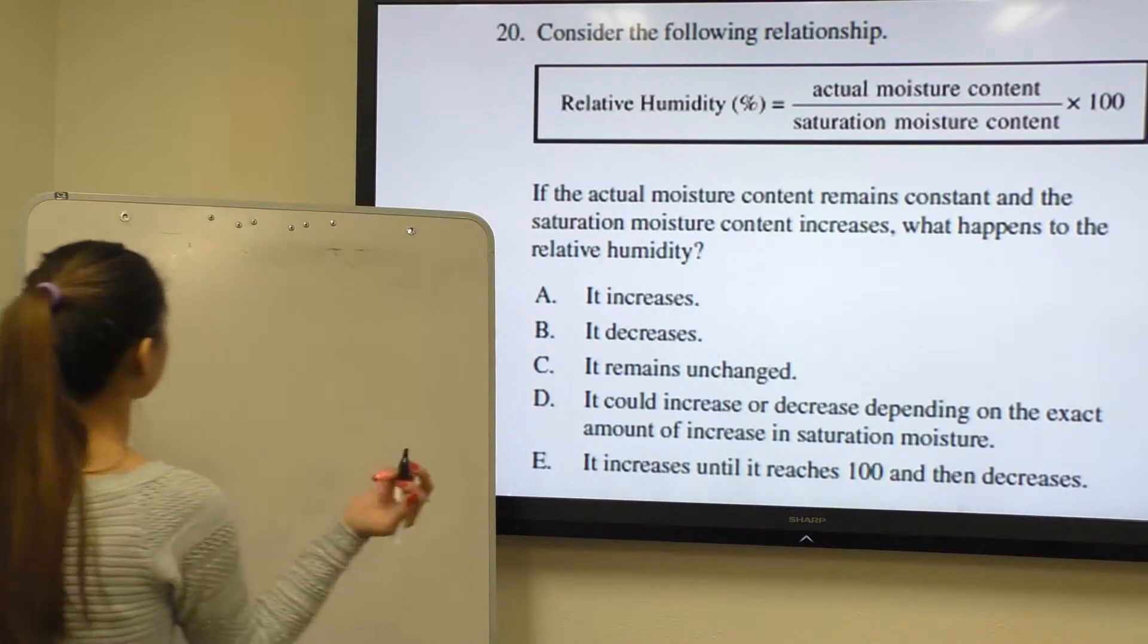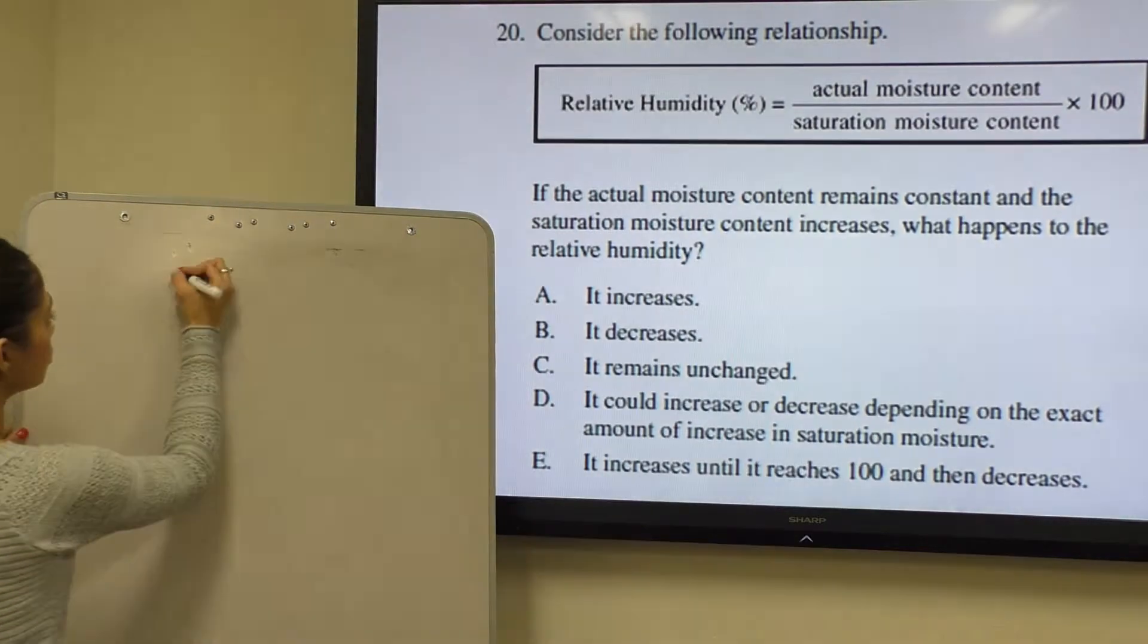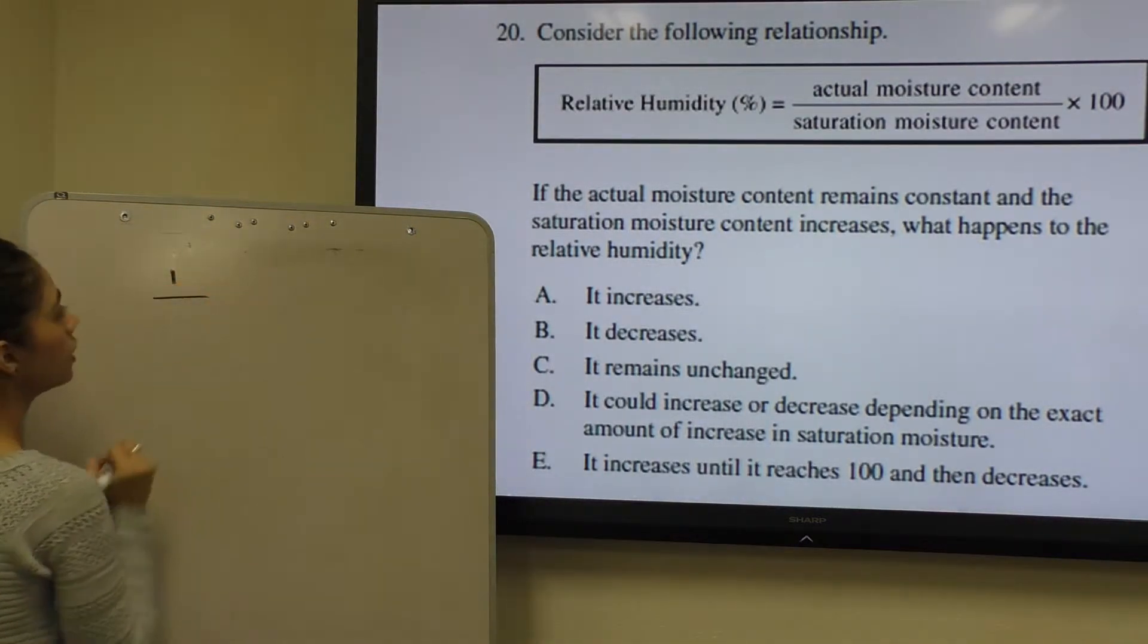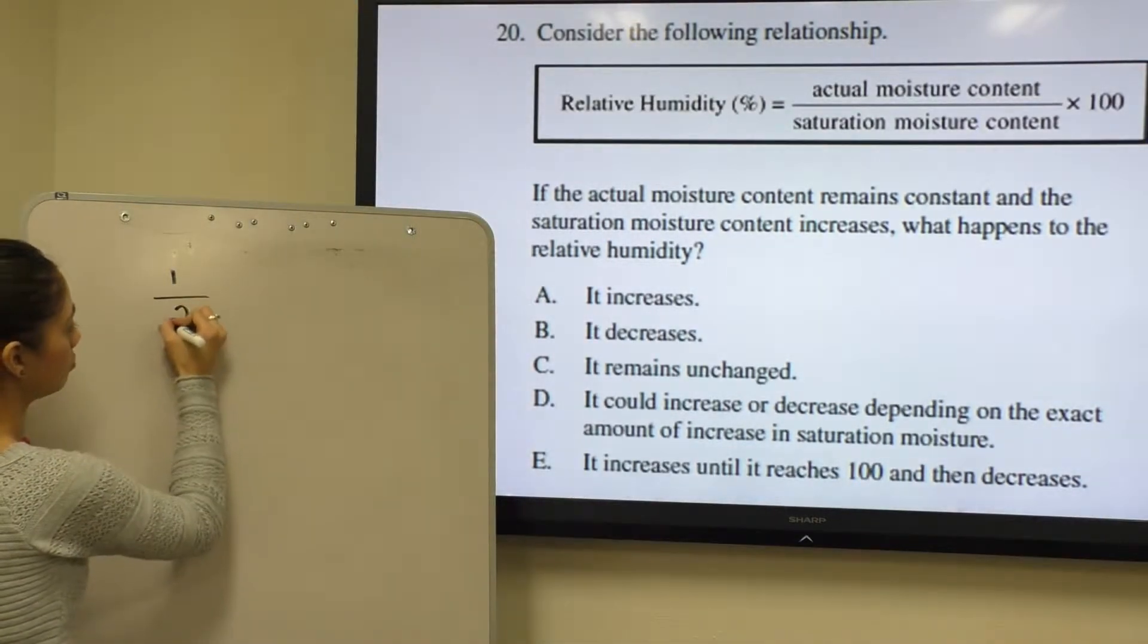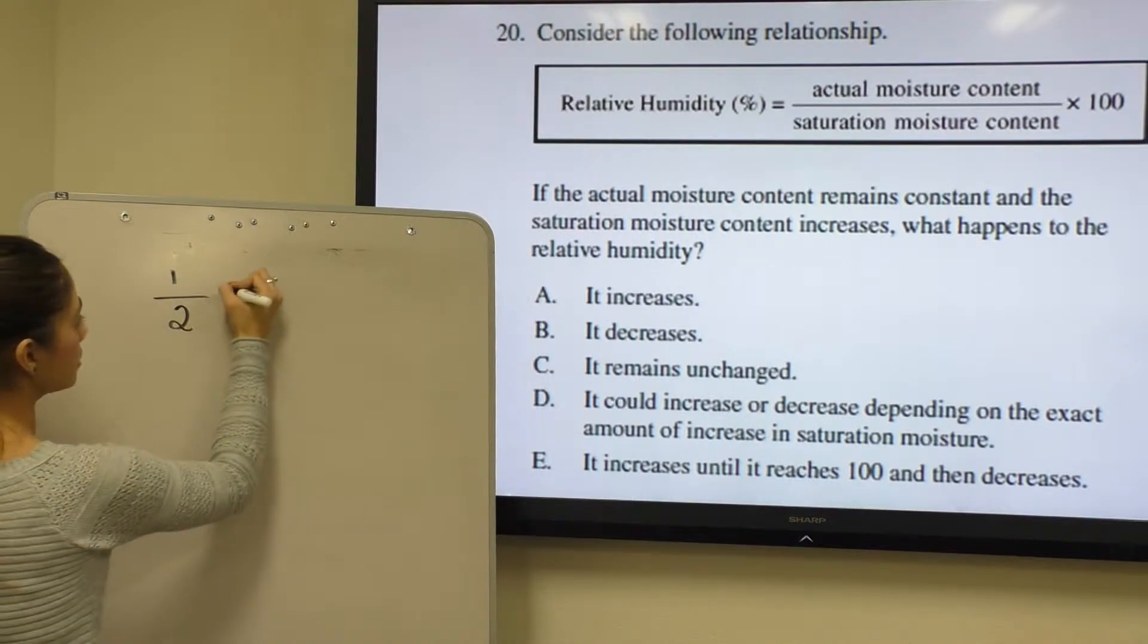So let's see what that looks like. Let's say that actual moisture content would be 1 initially and saturation moisture content would be 2 times 100.